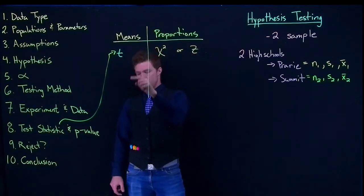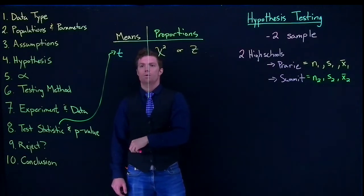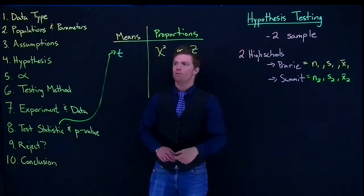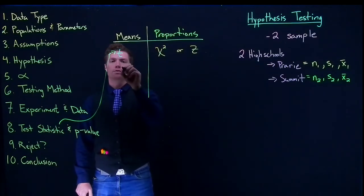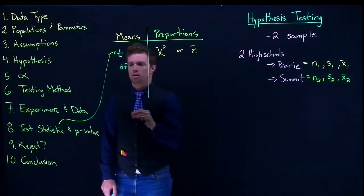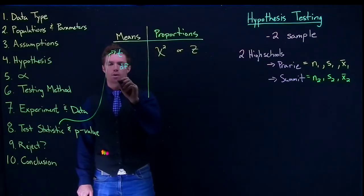Anyhow, when we do our t, because we're going to be wanting to report this in our APA format, we also are going to want to know our degrees of freedom, and then we also need to know our p-value.